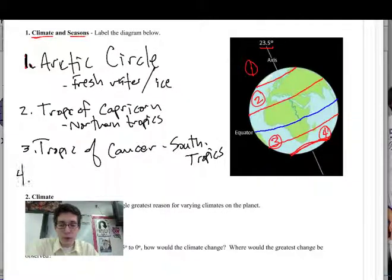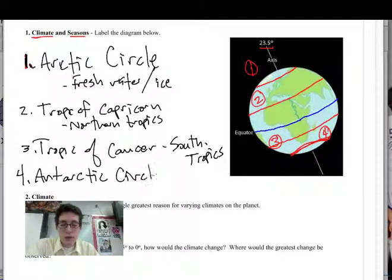And then finally, the fourth area is the Antarctic Circle. And Antarctica is down there with penguins and polar bears and all that good stuff. So there's four main regions that we're looking at. We've got the Arctic Circle, the Tropic of Capricorn, the Tropic of Cancer, and the Antarctic Circle. And these are going to come into play a lot more with the climate.